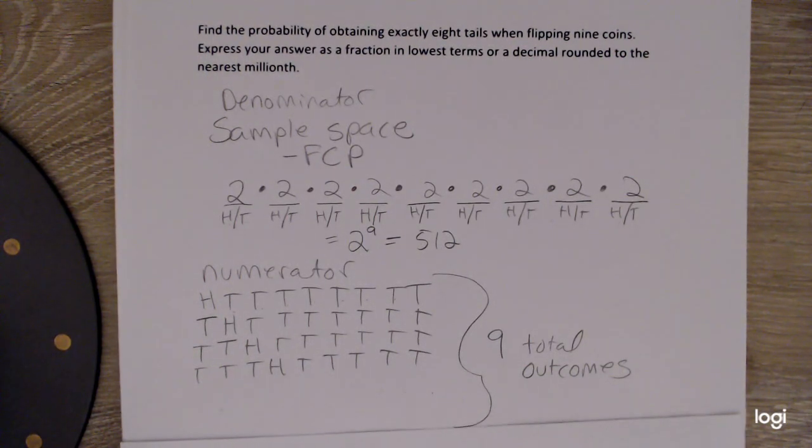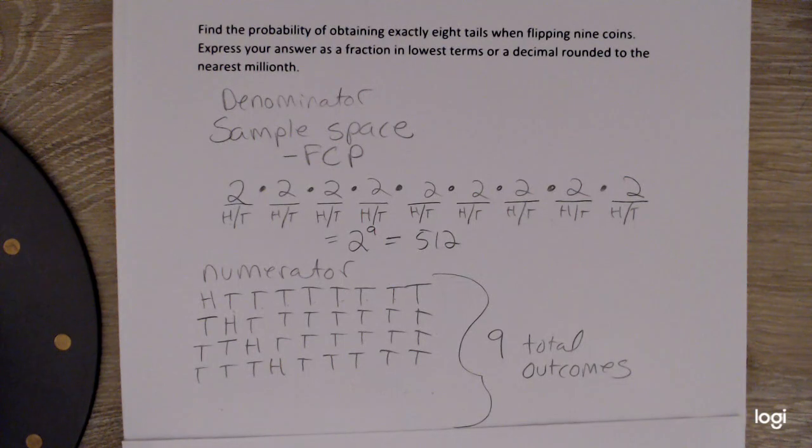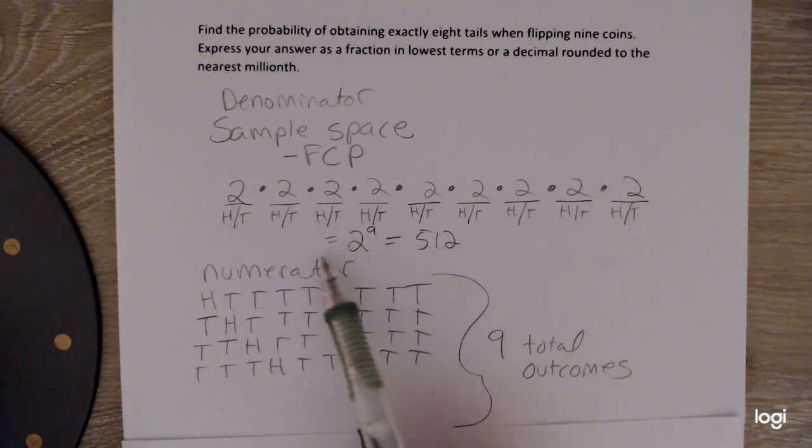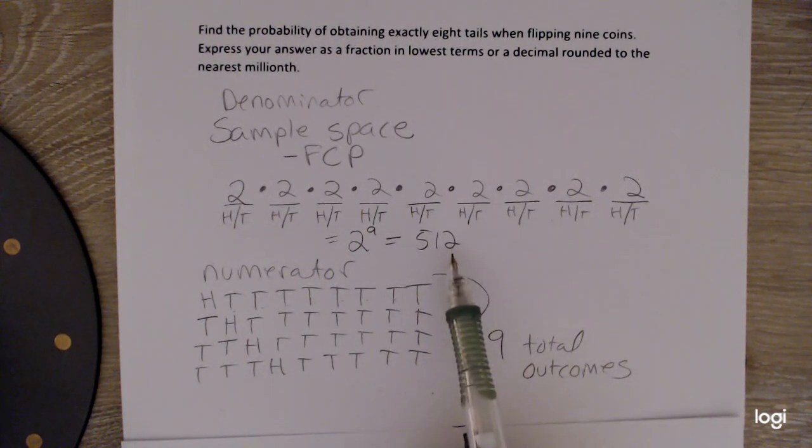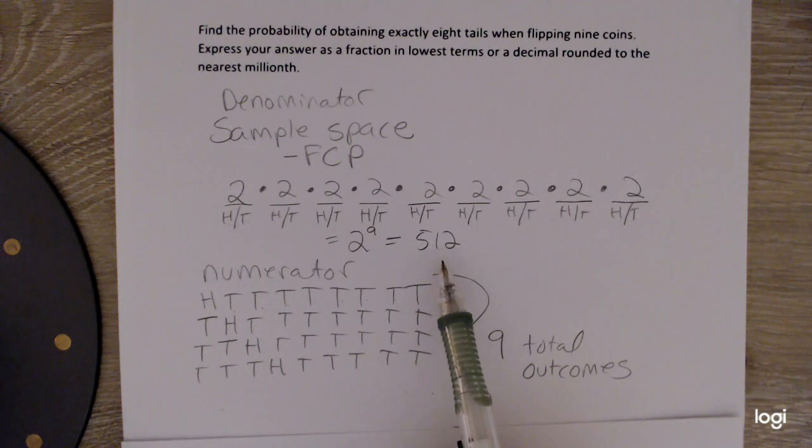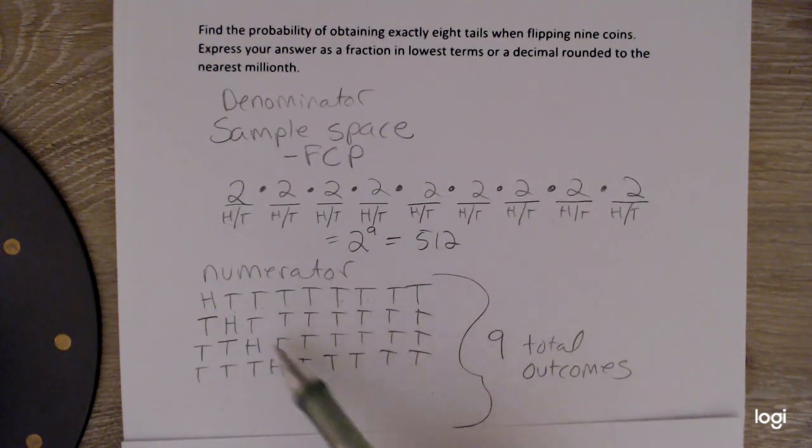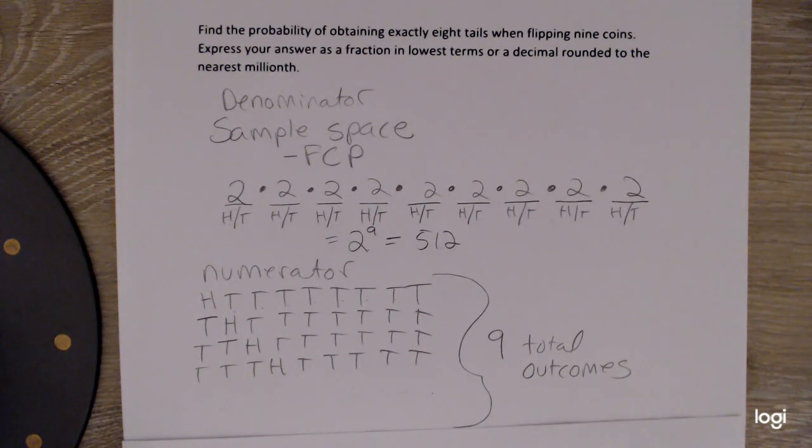And you can verify that yourself by just continuing to write out or systematically list all outcomes for the numerator. So the classical definition of probability, in essence, is something out of something else. The numerator is always a subset of the denominator. Contained in these 512 possible outcomes in the sample space, we have these nine where we have exactly eight tails.